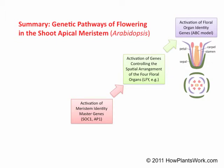Much has been learned about the genetics of flowering in the past 20 years, especially from research on the plant Arabidopsis. How the plant makes the transition from a vegetative meristem to a flowering meristem and then forms a flower involves complex genetic interactions. Presented here is a simplified version in which I have conveniently divided the process into three successive stages.